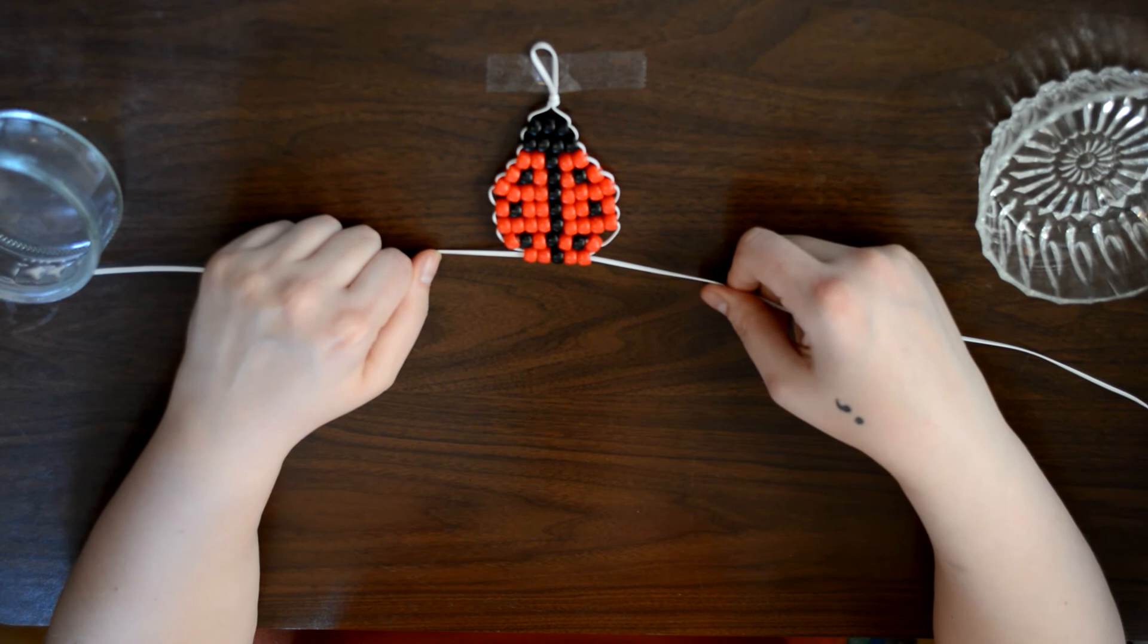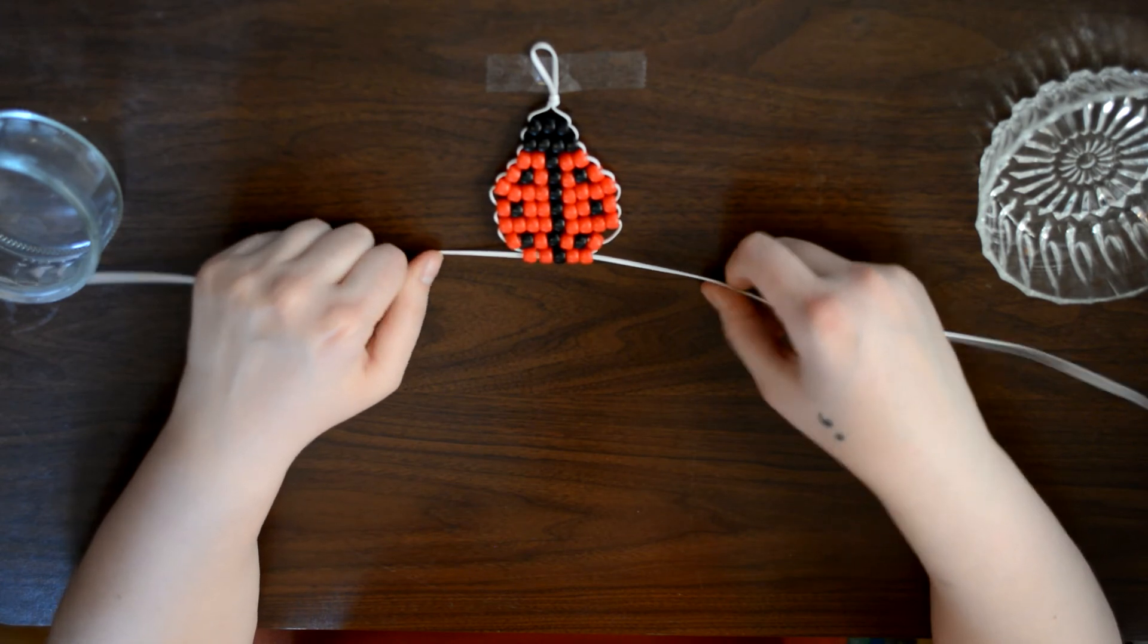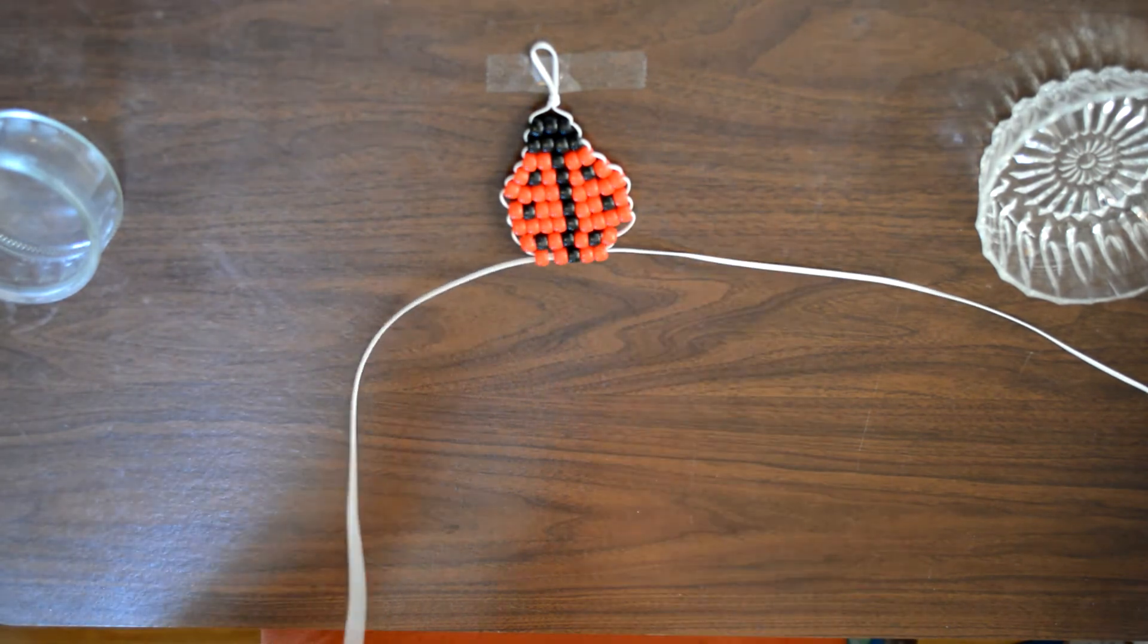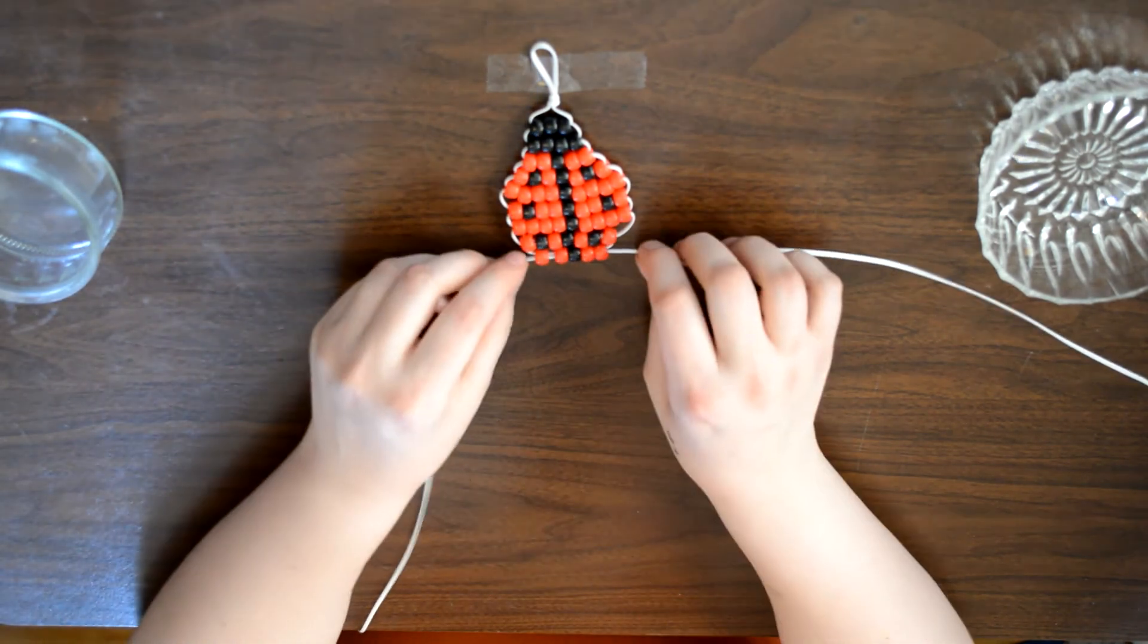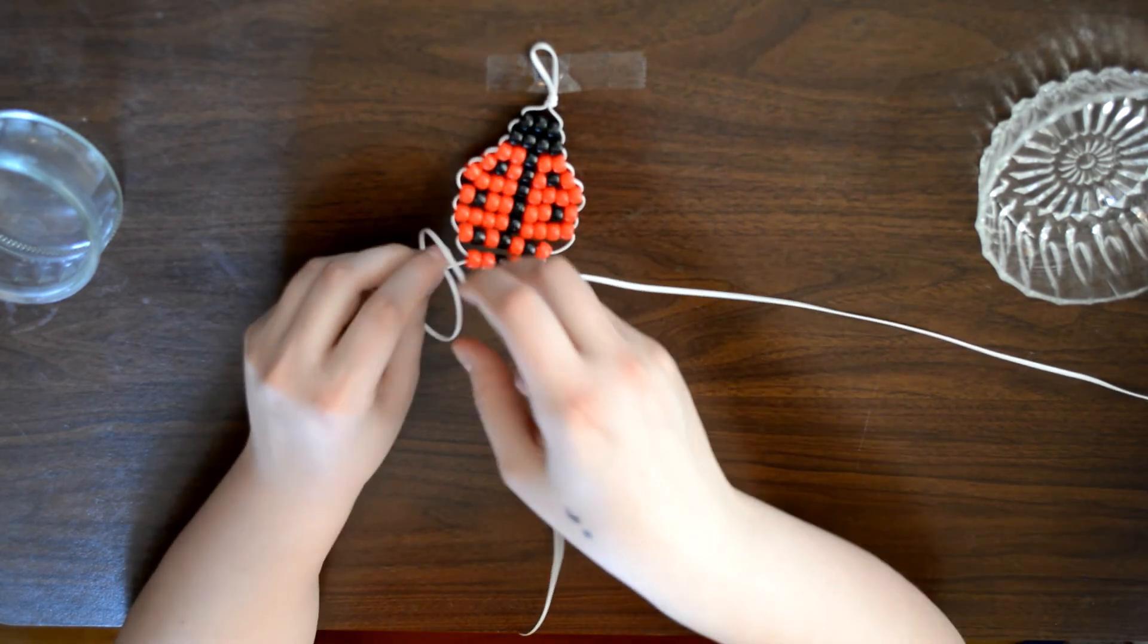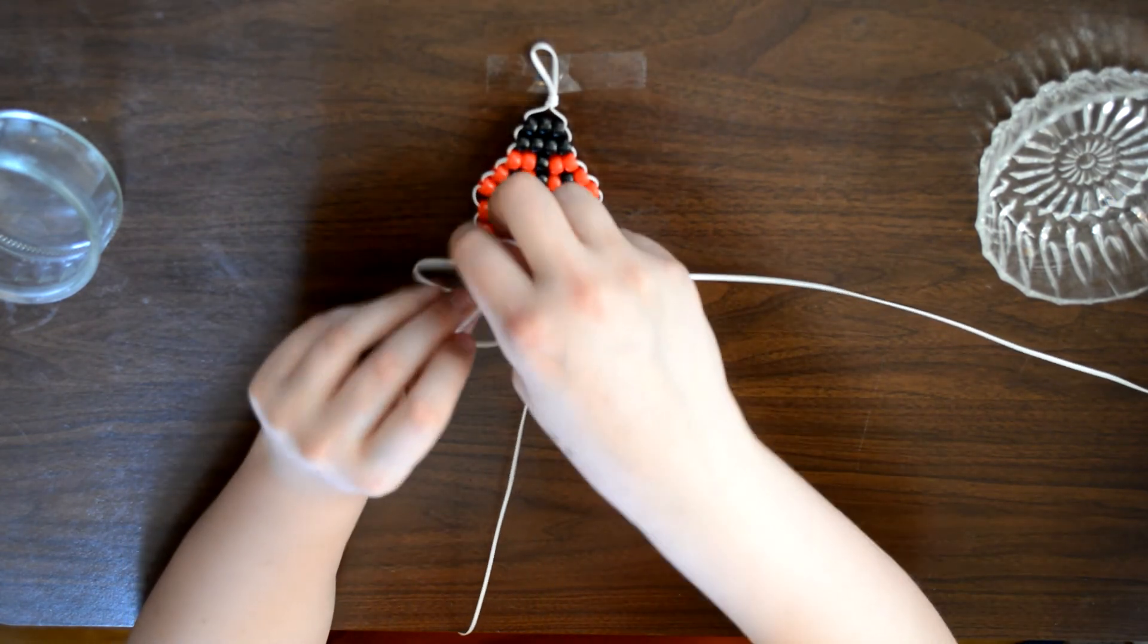And there is our finished bead buddy. So what you want to do to tie this off is to take one side at a time, cut it down to a more reasonable size. And then you want to just simply tie it off.